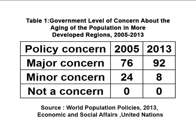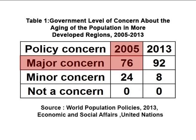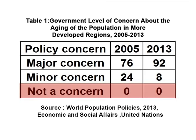The difference by development region was particularly stark in the percentage of governments that adopted both measures: 53% in more developed regions compared with only 15% in less developed regions. Table 1 shows the government level of concern about aging of population in more developed regions, as a percentage of nations who considered it a major concern, minor concern, or no concern at all. In 2013, aging had become a major concern for around 92% of developed countries, up from 76% in 2005. The percentage of countries considering it a minor concern declined from 24% to 8%. There were no countries that considered it unimportant in either year. It is clear that for the developed regions, aging is a major policy concern since they are aging rapidly and facing a number of associated challenges.